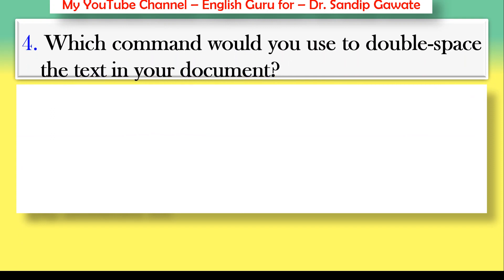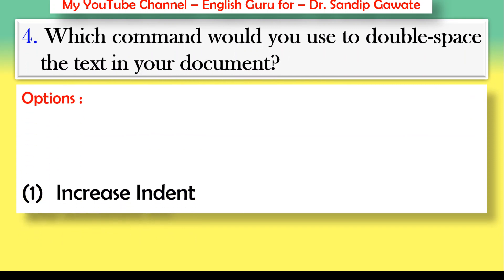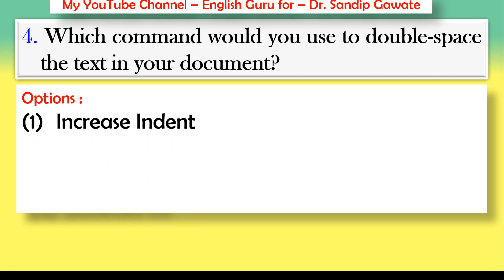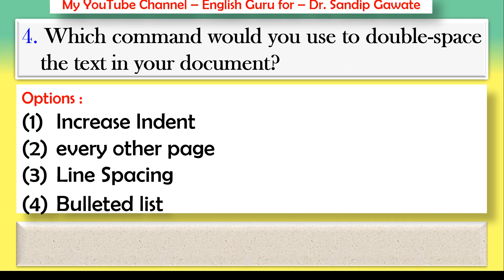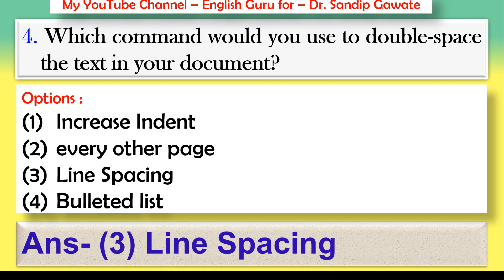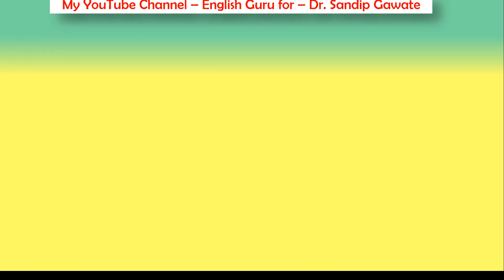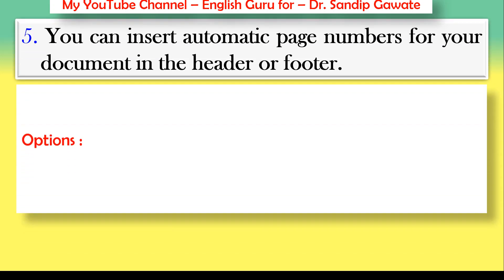Question 4: Which command would you use to double space the text in your document? Options: increase indent, every other page, line spacing, or bulleted list. Please try to understand the question and guess it. The correct answer is option number three — line spacing.